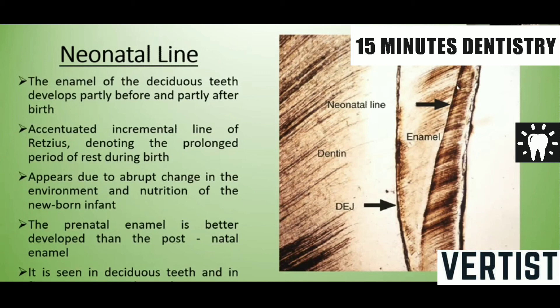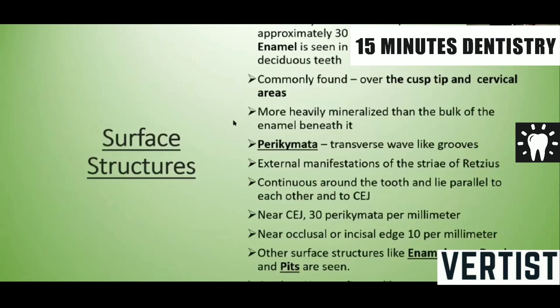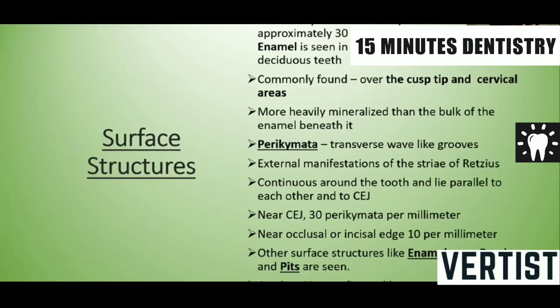The neonatal line is seen in all deciduous teeth and in the first permanent molars only. Among the surface structures, prismless enamel is seen in up to 70% of permanent teeth. This structureless layer of enamel is usually 30 micrometers thick and is seen in all deciduous teeth and in up to 70% of permanent teeth, commonly found over the cusps and cervical areas. Perikymata are transverse wave-like ridges that are the external manifestations of the striae of Retzius. They lie parallel to each other and to the cemento-enamel junction, with about 30 perikymata per millimeter near the cemento-enamel junction. Other surface structures include enamel caps, enamel cracks, and pits.